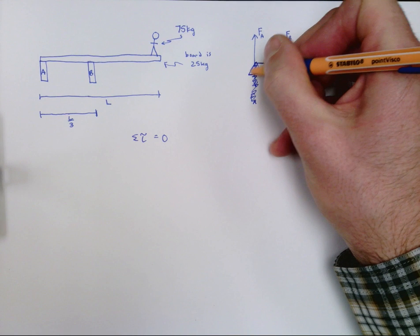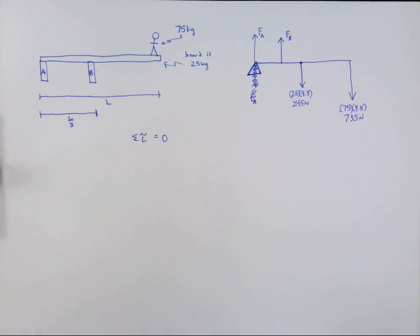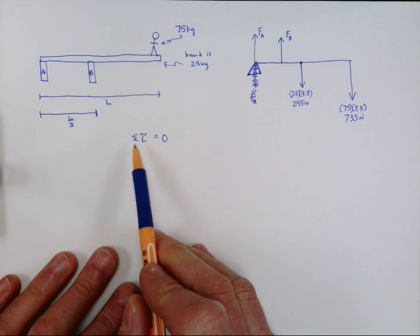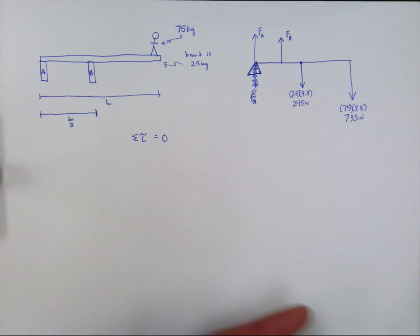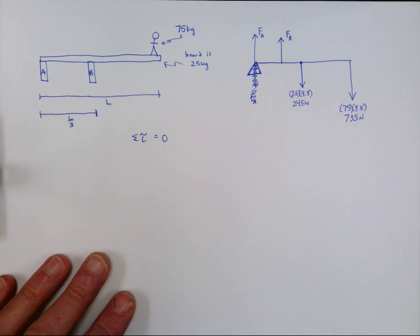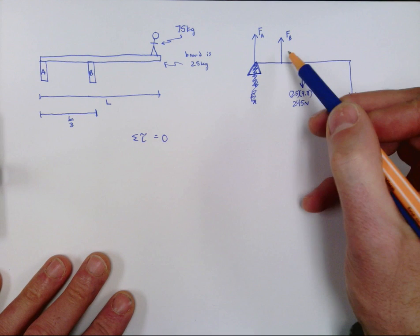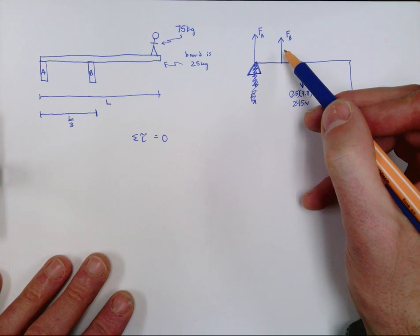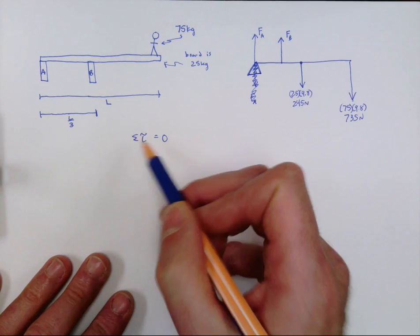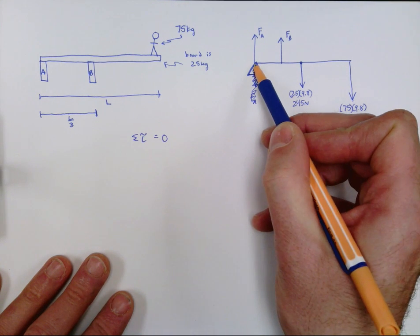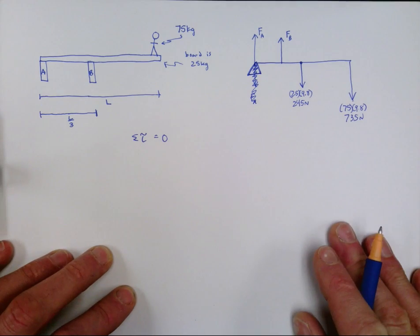I'm going to put the fulcrum right here at force A. And now what I'm going to do is add up all the torques around this location. They have to equal zero, otherwise this thing wouldn't be at rest. Essentially, we know this torque and that torque because we have those numbers. What we're really doing is finding out how big does force B have to be in order for there to be no torques around this point.